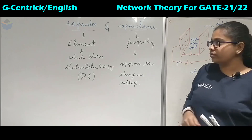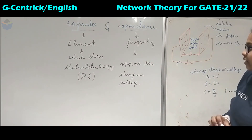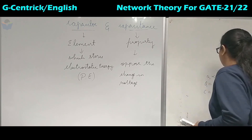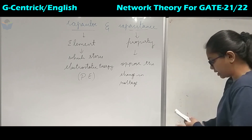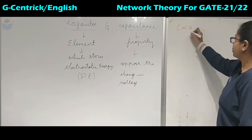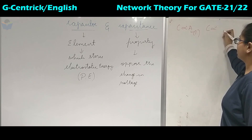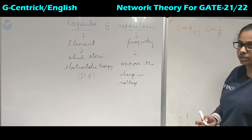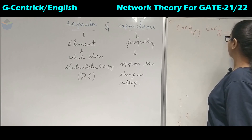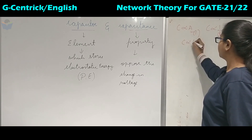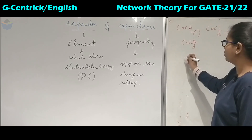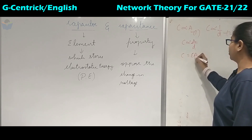Now there are some factors which capacitance depends upon, found by scientists through trial and error. Capacitance is directly proportional to the area of cross section (equation 1), and inversely proportional to the distance between the plates. Combining these two equations, C is directly proportional to area of cross section upon distance.